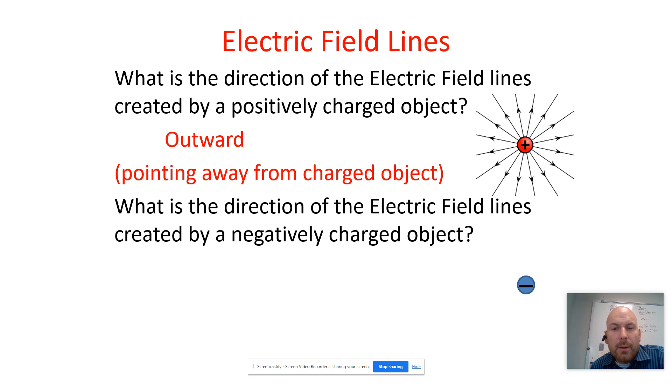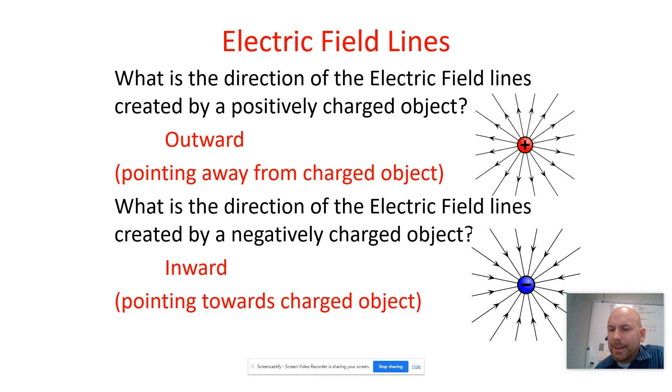And then a negative charged object creates electric field lines that are going inward towards, pointing towards the charged object that looks like that.